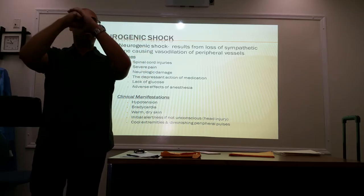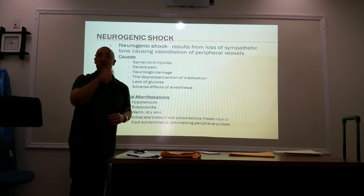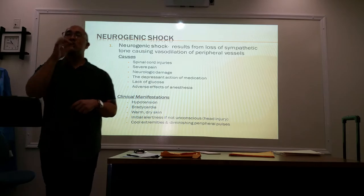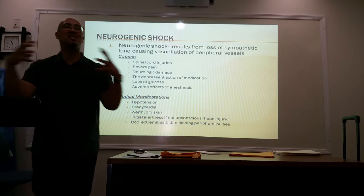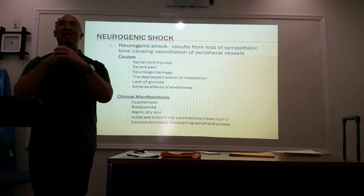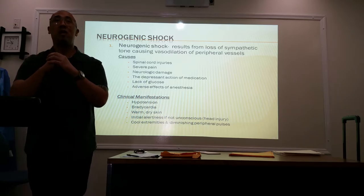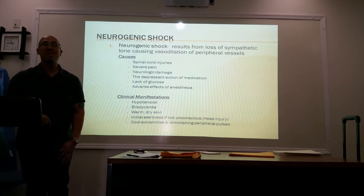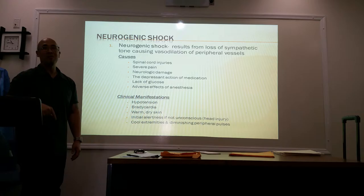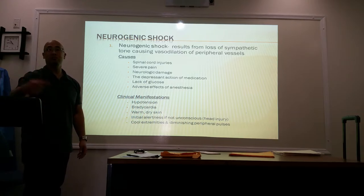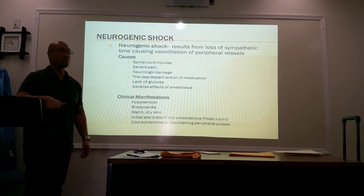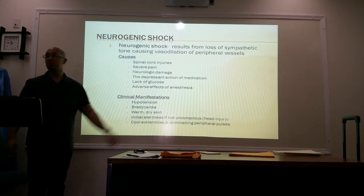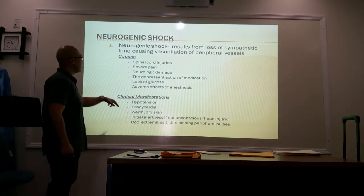Think of a balloon: the first time you blow it up, it's hard and bounces back to its original shape. But if you continue to blow air in and release it repeatedly, the elasticity wears out. That's what happens with someone who's diabetic — their vessels wear out, blood gets stuck in the peripherals, and doesn't return to the heart. That's also why diabetics get edema and end up losing limbs: there isn't good blood exchange, and lack of oxygen and nutrients to vessels in the lower extremities causes tissue loss. Adverse effects of anesthesia will also cause vasodilation.